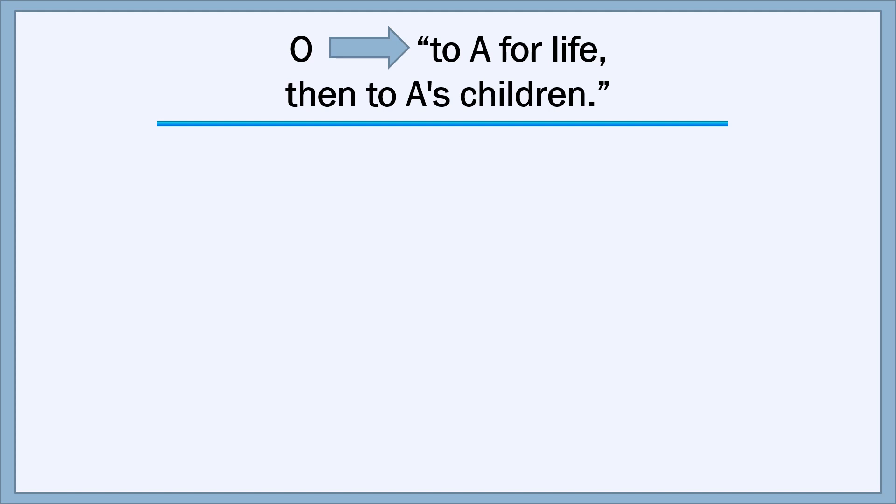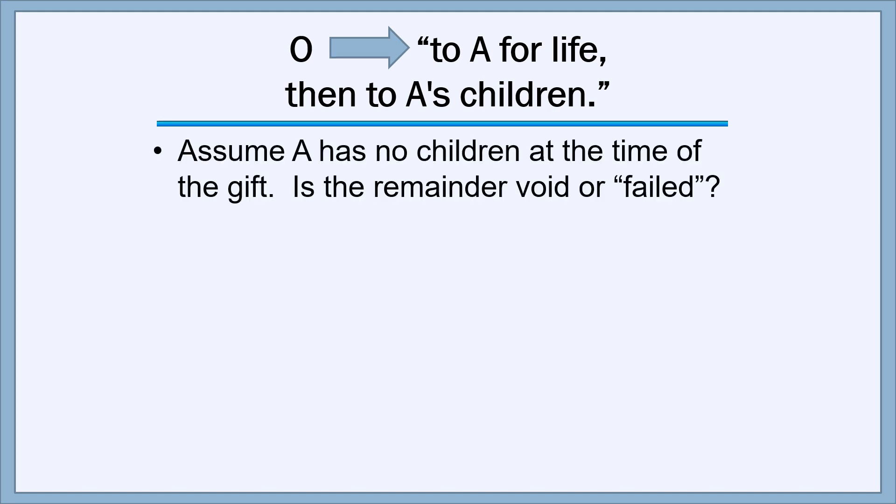Let's take an example of a class gift: to A for life, then to A's children. Assume that A has no children at the time of the gift. Is the remainder void or has it failed? No, not at all, because it's a future interest. It doesn't take possession until A dies, and therefore we have some time for A to have children to become the holders of the future interest.